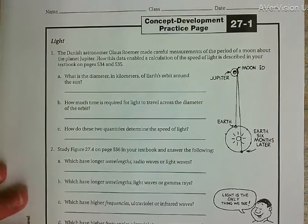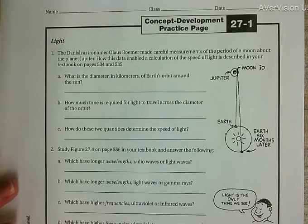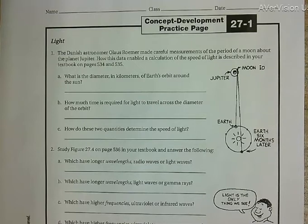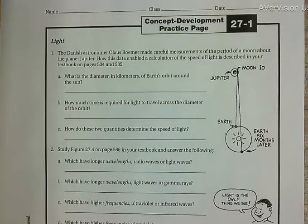Question number one says the Danish astronomer Olaus Romer made careful measurements of the period of a moon about the planet Jupiter. How this data enabled a calculation of the speed of light is described in your textbook on pages 534 and 535.